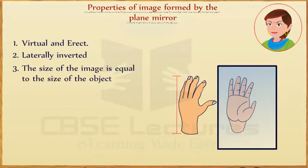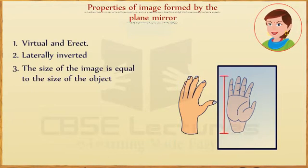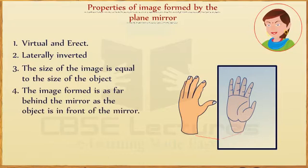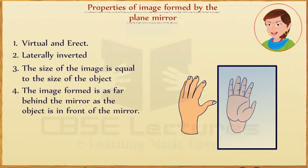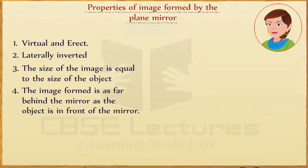Third, the size of the image is equal to the size of the object. Fourth, the image formed is as far behind the mirror as the object is in front of the mirror.